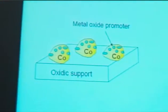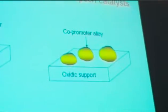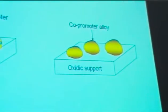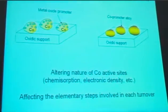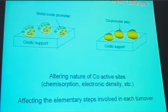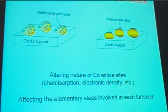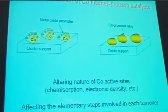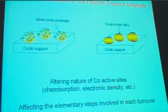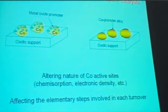Another type is the electronic promoter, and that is more difficult to prove. There are two main groups: metal oxide promoters that decorate the surface, or cobalt promoter alloys where the promoter element forms an integral part of the alloy. In that respect, you have intimate contact with the active element, and by this they are able to influence the electron density, the chemisorption, etc.